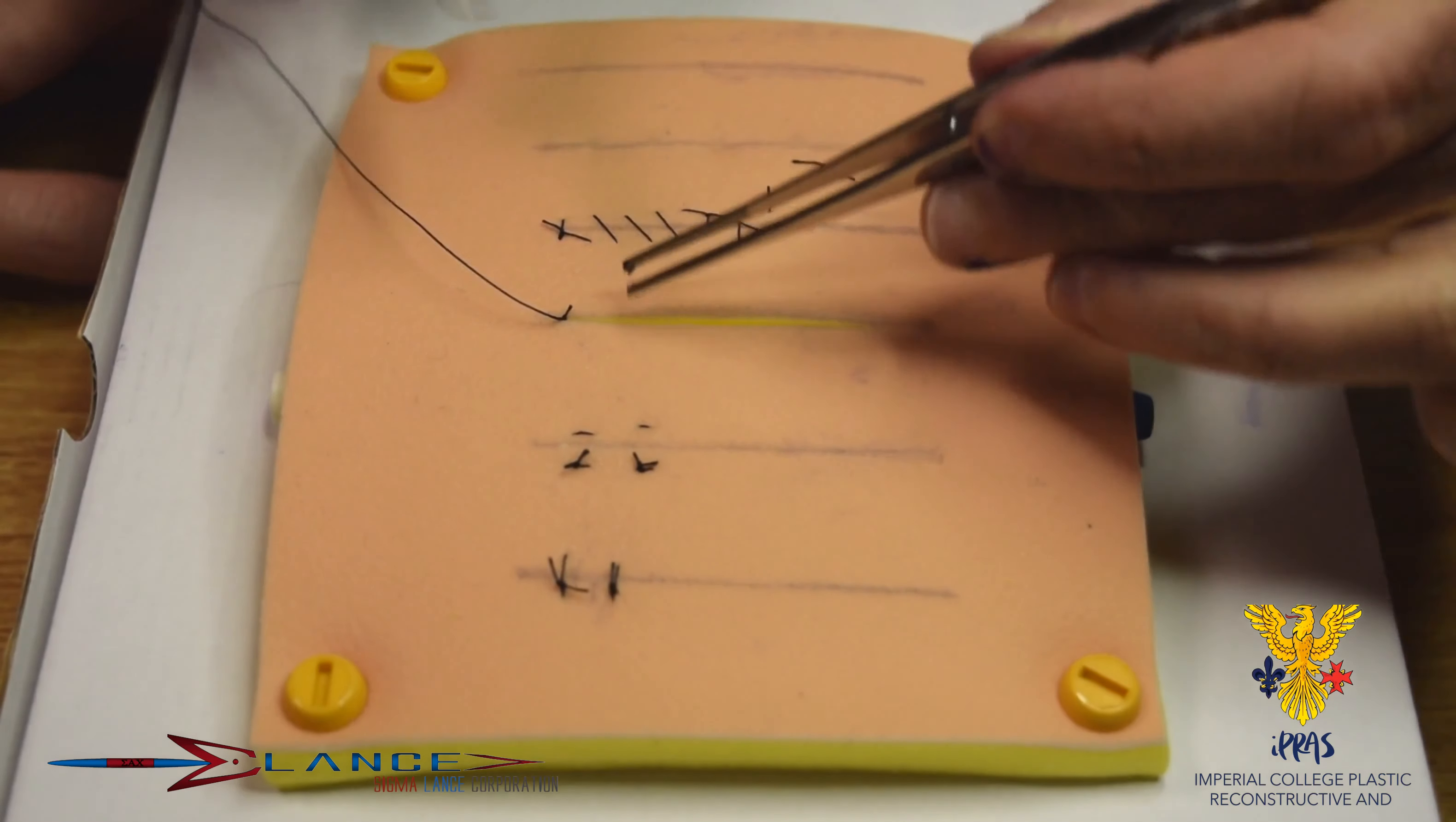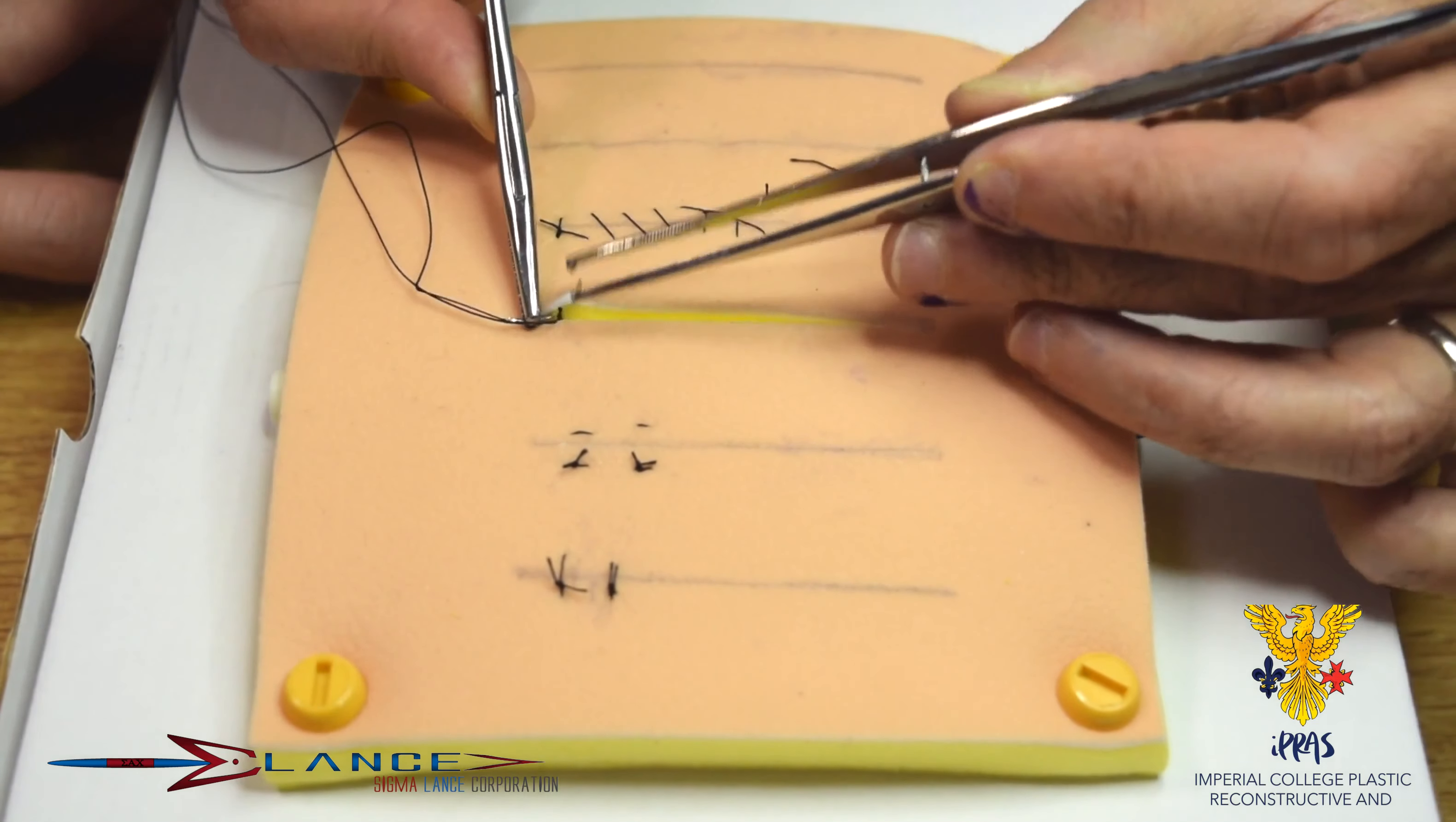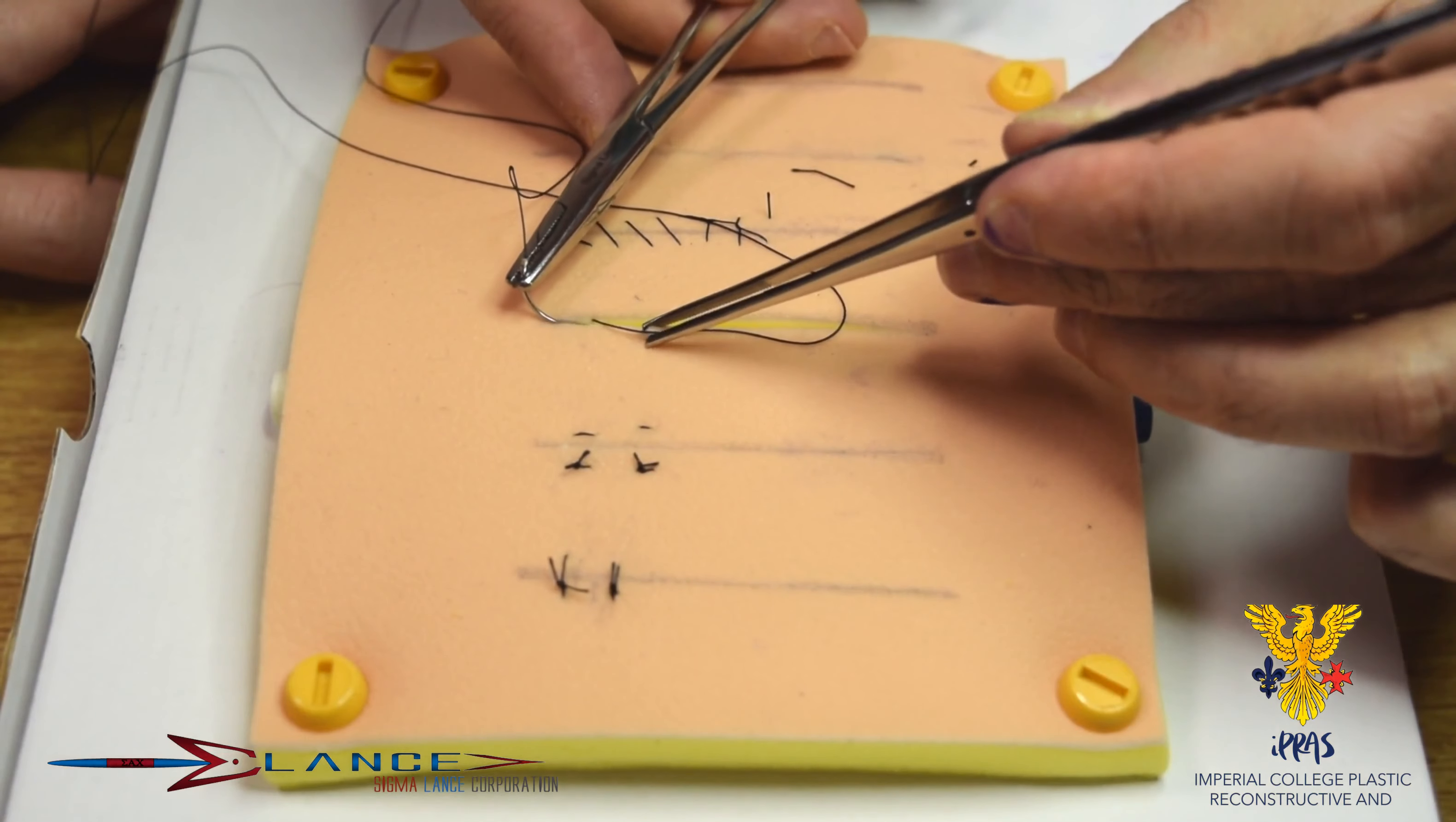And then really, as we talked about before, the closure has to go in a horizontal fashion, try to stay in this white dermal layer, and the next stitch must be slightly behind where the last stitch comes out on the opposite side.